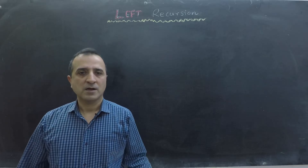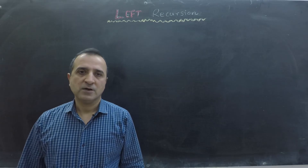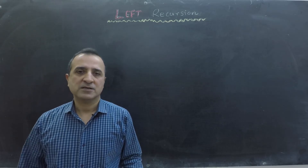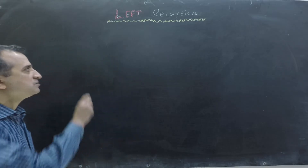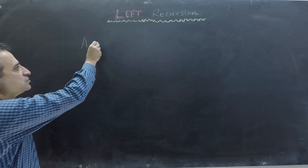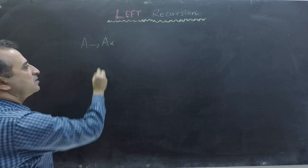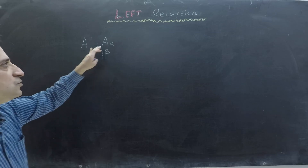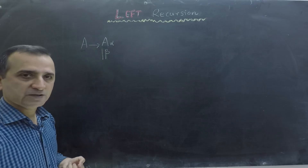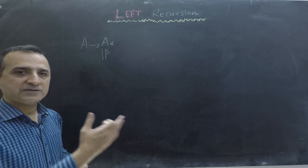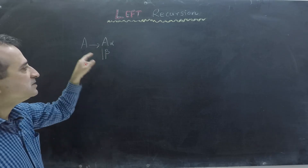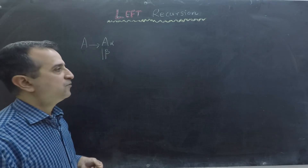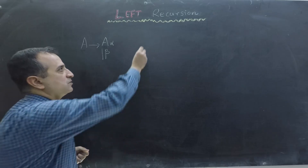In this video we will learn to remove left recursion from our context-free grammar with multiple examples. But before that, what is left recursion and why we want to remove it? Consider this production: A goes to A alpha or beta. Here A goes to itself, calling itself like a recursive function, and this call is on the left side of this production. So this is left recursion, and it is problematic for top-down parsing.